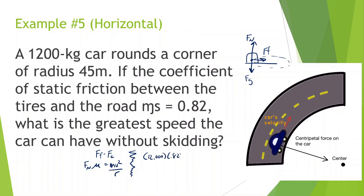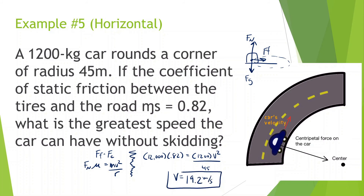Plugging in: normal force equals gravity = 12,000 N, mu = 0.82, mass = 1200 kg, radius = 45 m. Solving for v: square root of (12,000 × 0.82 × 45 / 1200) gives us 19.2 meters per second. If the car went faster than 19.2 m/s it will start to drift and slide, unable to round the corner. Slower than that, it can go around the bend easily.